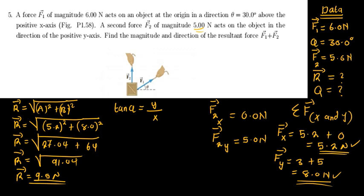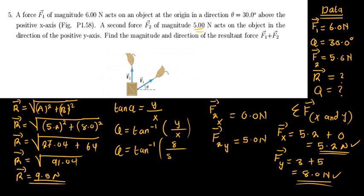For direction, tan theta equals the y-component over the x-component, so theta equals tan inverse of y over x. Our y-component is 8 and x-component is 5.2, so theta equals tan inverse of 8 over 5.2, which gives us 56.97, approximately 57 degrees.